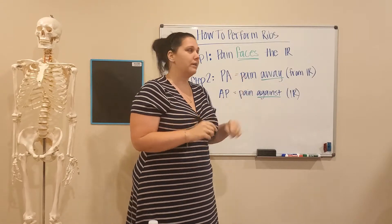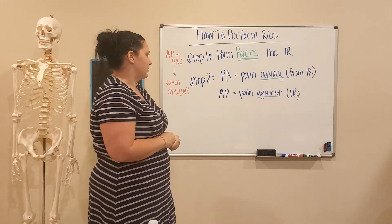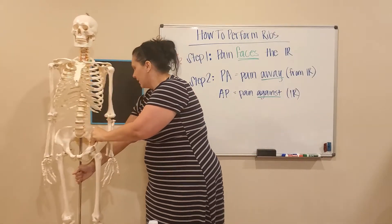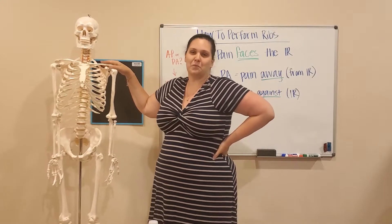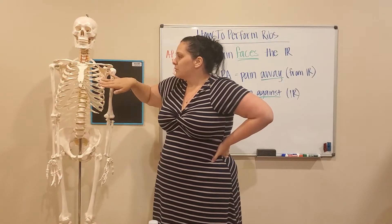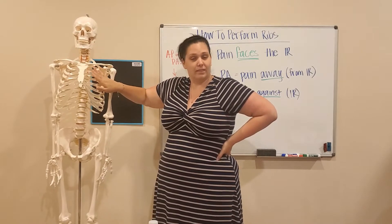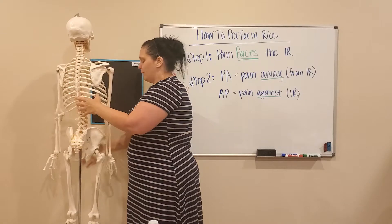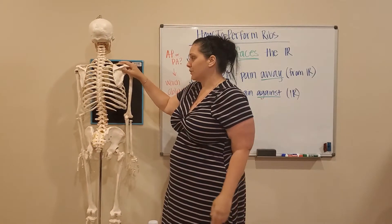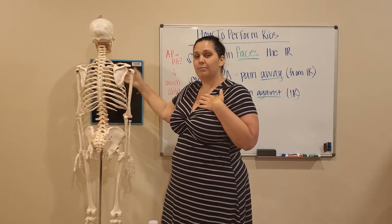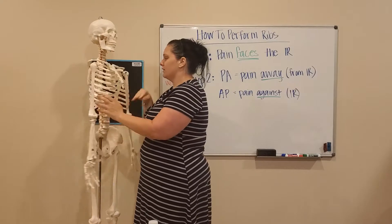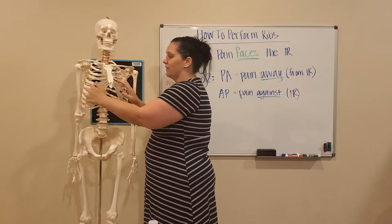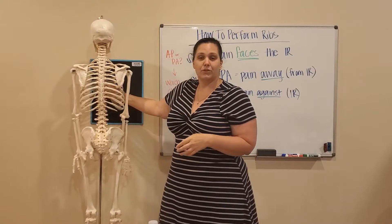Step one: your pain is going to face the image receptor, and that step tells you whether you're doing an AP or PA image. With my skeleton Shannon here — if the patient had pain on the left anterior side, I would turn the patient so the pain faces the image receptor. Step one tells me the patient would be in PA. So for left anterior pain, the first image you would take would be a PA.